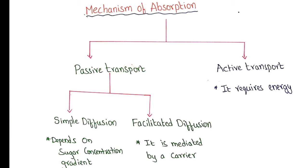Coming to the mechanism of absorption, monosaccharides are absorbed in two ways: passive transport and active transport. Passive transport does not require energy, and it includes two types: simple diffusion and facilitated diffusion. Simple diffusion depends upon the sugar concentration gradient — the sugar is transported from high concentration to low concentration. Facilitated diffusion is mediated by a carrier. Sugars like galactose and glucose are transported by active transport, which requires energy, mostly supplied by adenosine triphosphate.